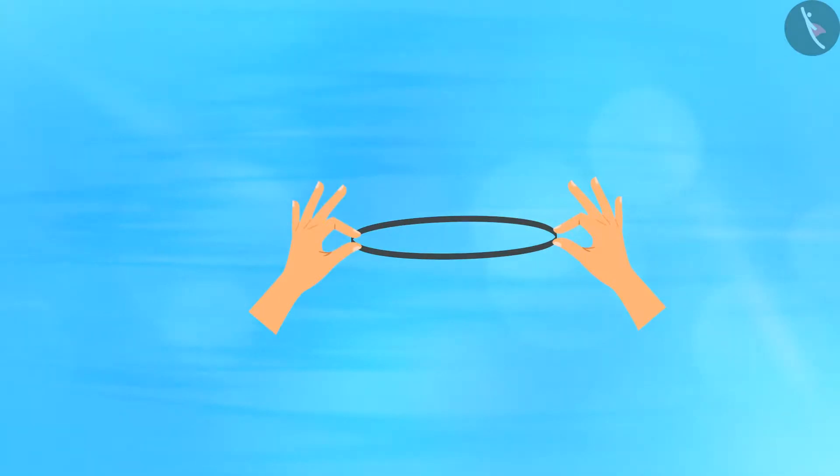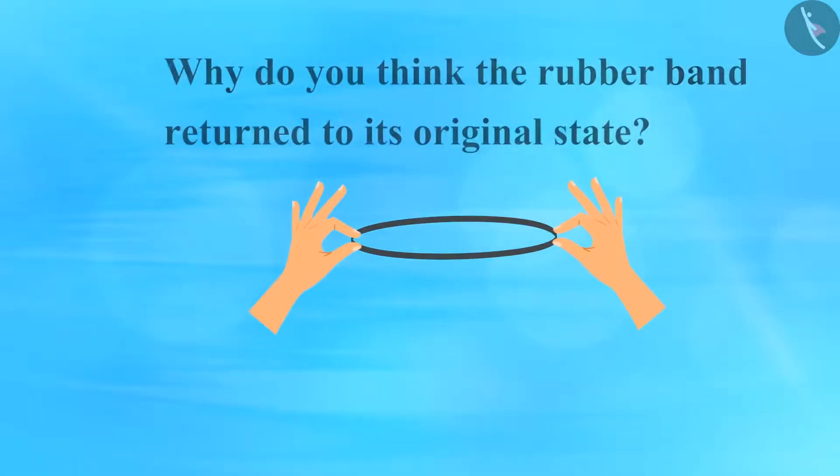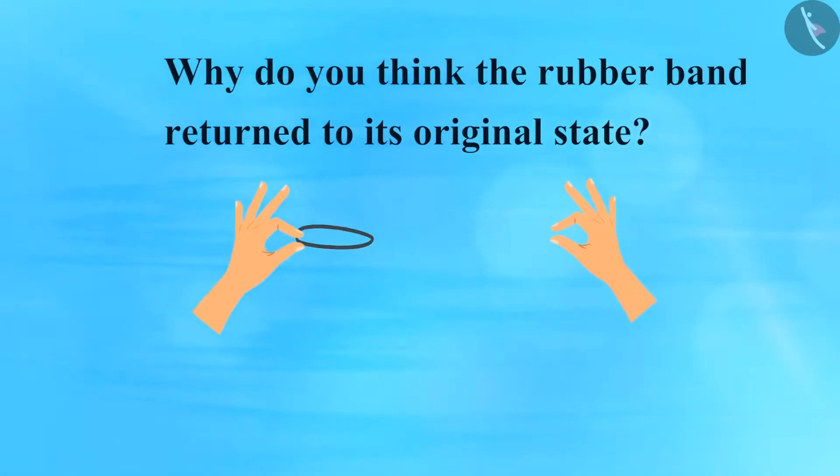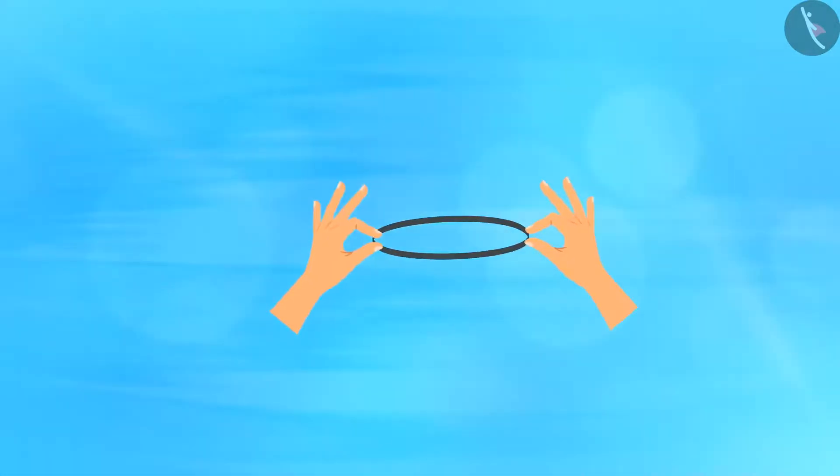The rubber band will get stretched. Now, release the rubber band from one end and you will see that the band returns to its original state. It is because the band acquired energy when it was stretched.